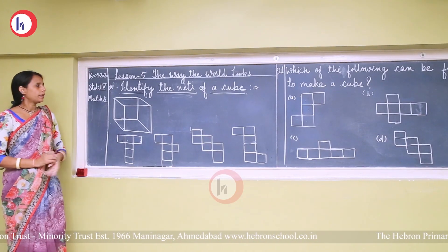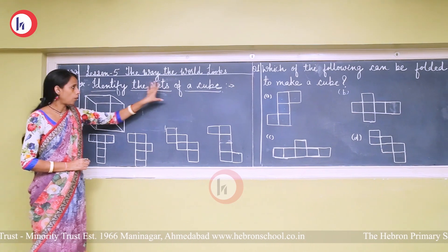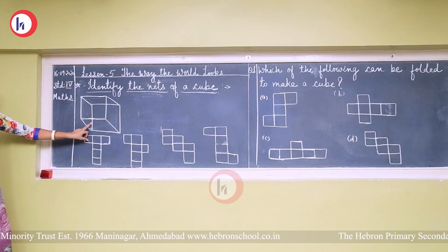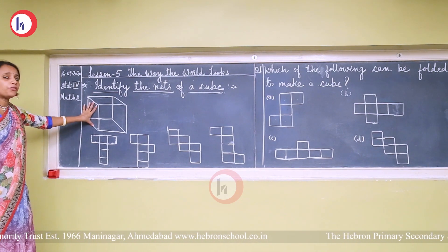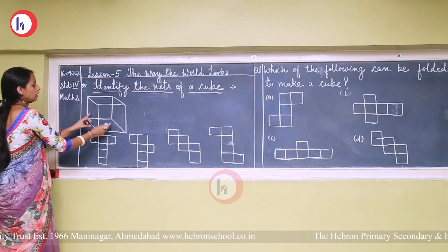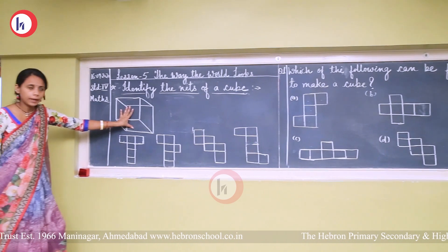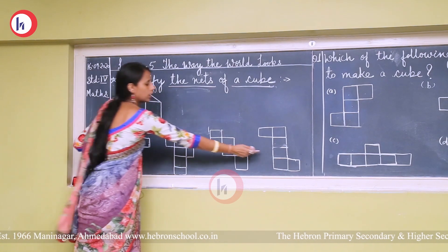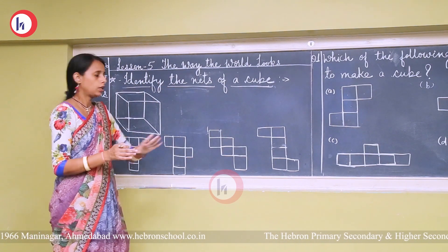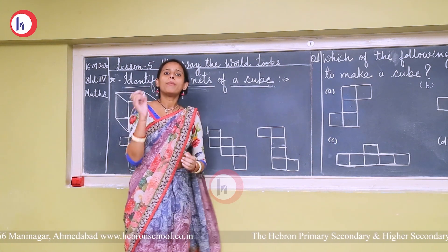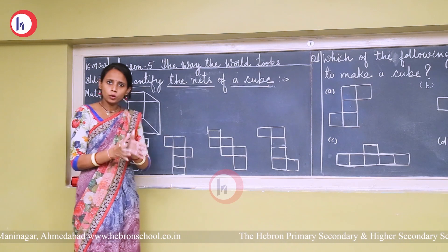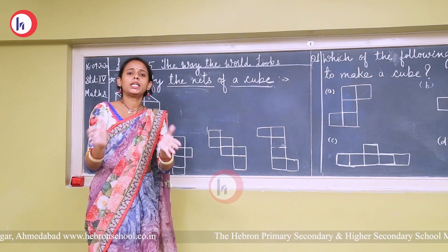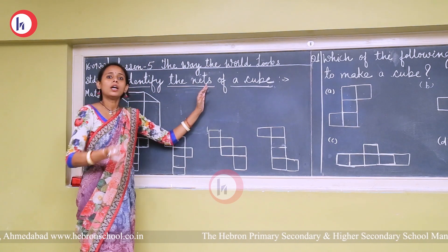Our next topic is identifying the nets of a cube. First, we should know what a cube is. There are 6 faces in a cube. Nets of a cube — whenever we open a cube, it looks like certain flat figures. And whenever we fold it back, it makes a perfect cube. If folding it makes a perfect cube, it is called a net of a cube. If it does not make a perfect cube, then it is not a net of a cube.